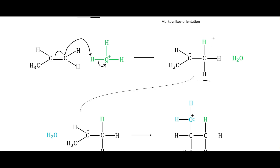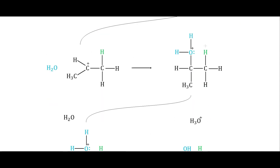We end up with our hydrogen bound to the carbon with the most number of other hydrogens, or the least number of substituents, so we get the carbocation on the most stable carbon. Our hydronium has turned into water. Then we can bring in another water molecule — it could be the same water or a different one since this is in a solution of water.